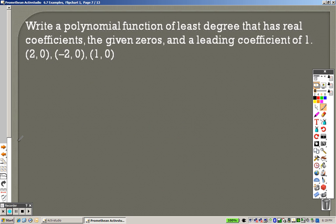Write a polynomial function of least degree that has real coefficients. The given zeros and the coefficients are all there. Basically, all this is saying is a different way. This, remember, is your x coordinate and your y coordinate. That's your x coordinate and your y coordinate. That's your x coordinate and your y coordinate.